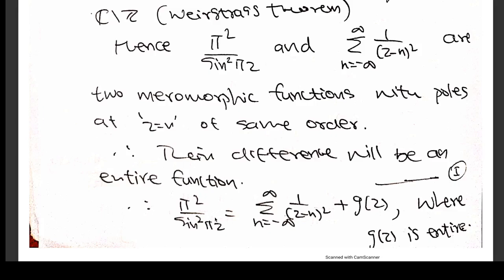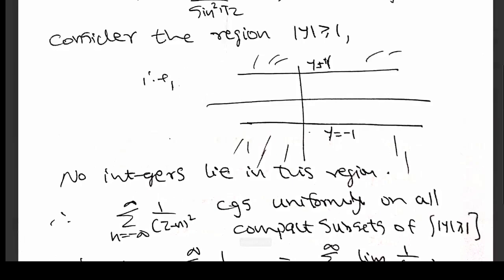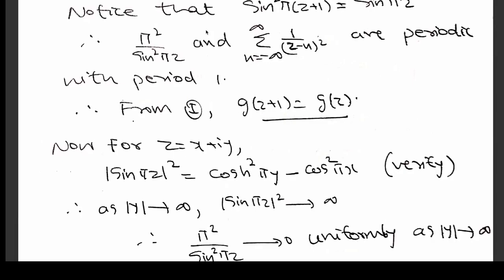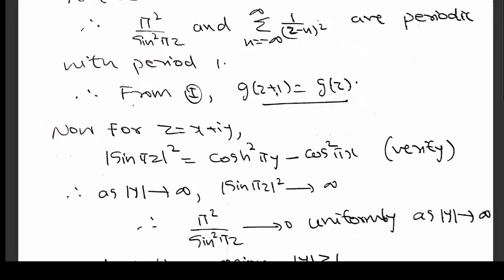Our idea is that g is an entire function and we want to prove it is identically 0. We will prove it is bounded first: it goes to 0 as |Im(z)| tends to infinity. So it will be a bounded entire function, which by Liouville's theorem must be a constant, and that constant must be 0. Since both π²/sin²(πz) and the infinite series are periodic with period 1, and if you replace z by z + 1 in the series, the order of terms just shifts, so the limit is the same. Therefore g(z + 1) = g(z), so g is also periodic with period 1.